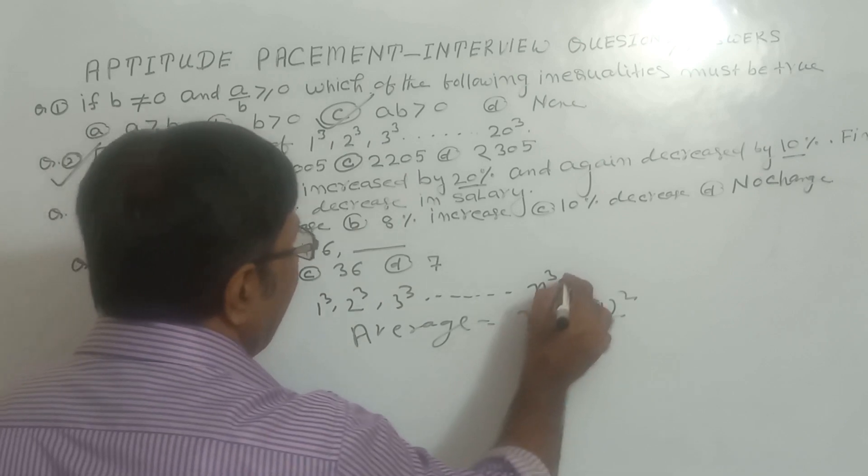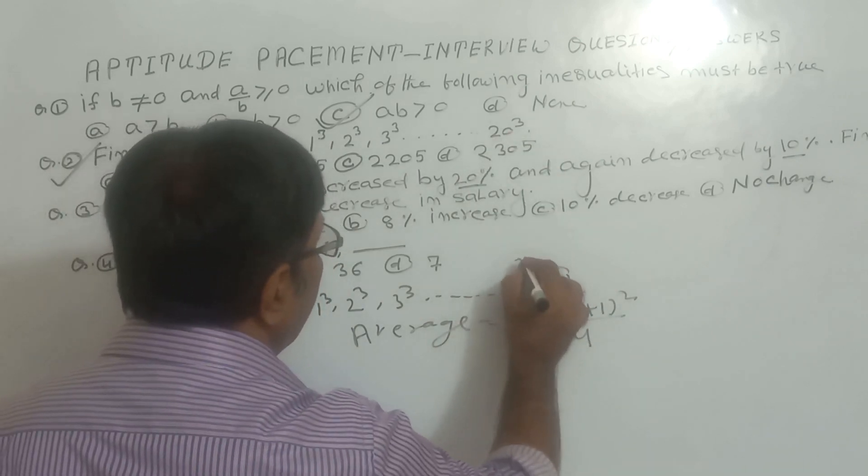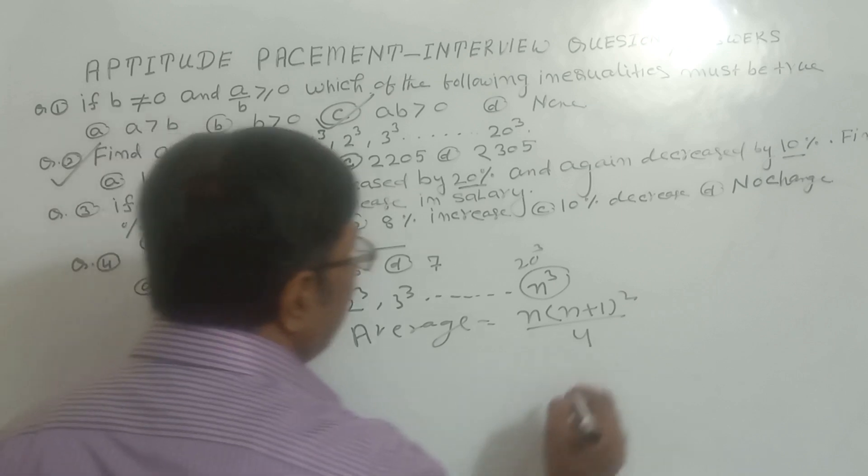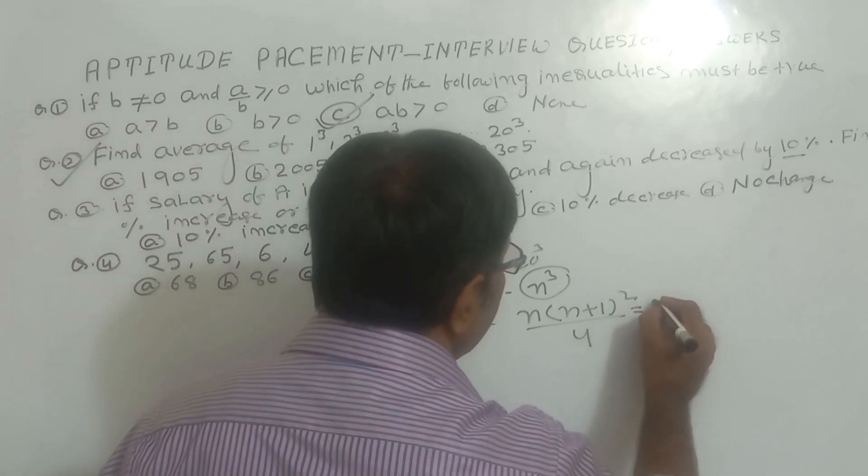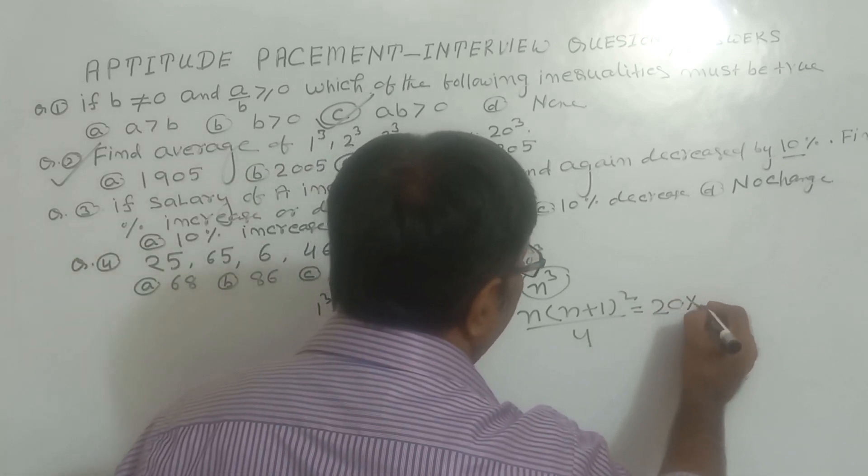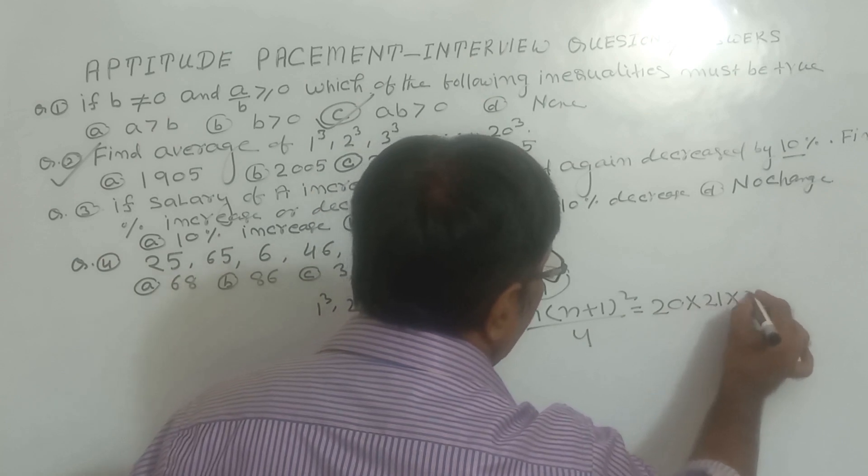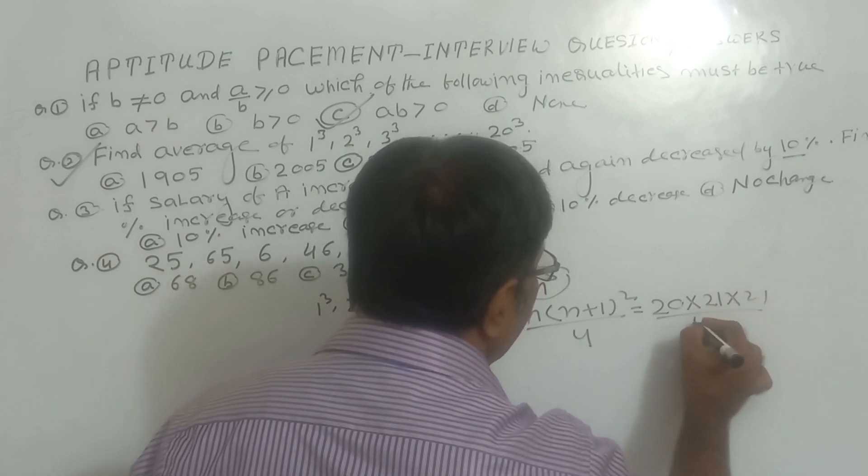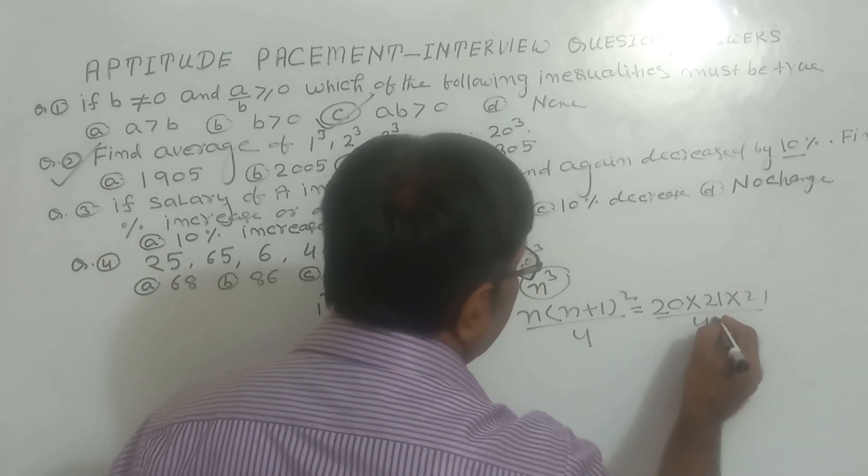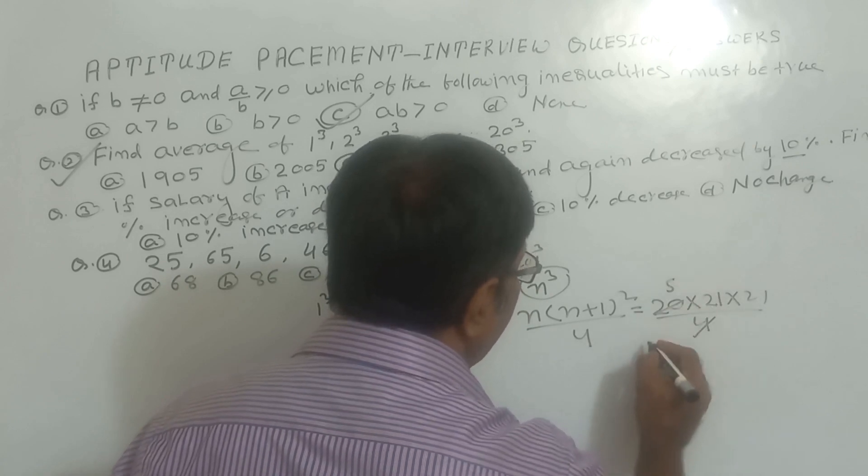So here last number N is 20. So we will use N here as 20. So this is 20 multiplied by 21 times 21 and divided by 4. So this is 5 times 20.